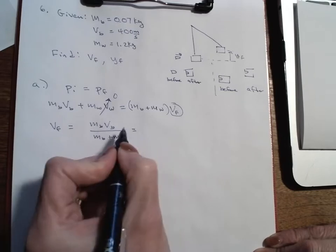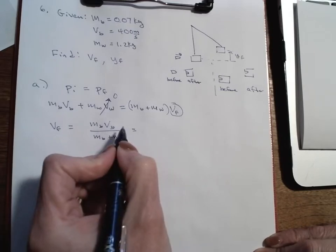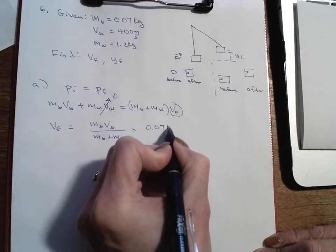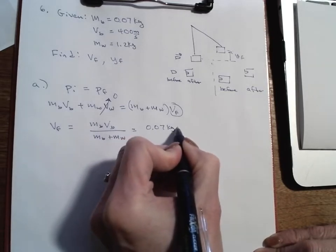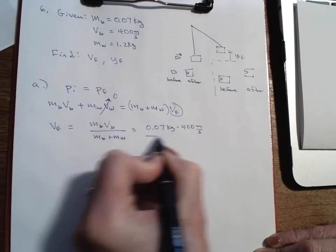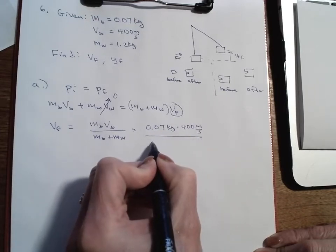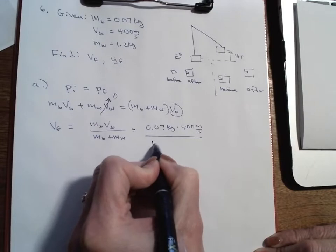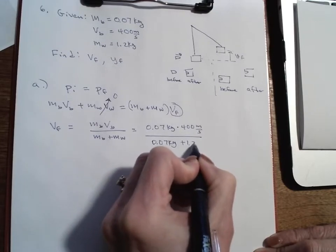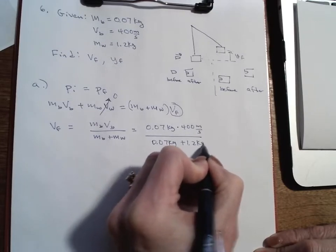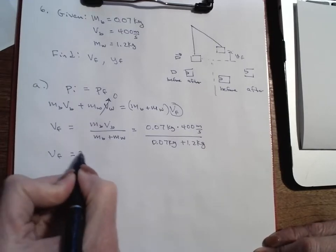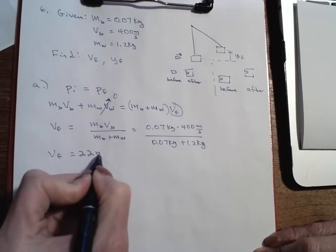V-final equals mass of bullet times velocity of bullet divided by mass of bullet plus mass of wood. That gives us 0.07 kilograms times 400 meters per second divided by 0.07 plus 1.2 kilograms. So v-final equals 22 meters per second.